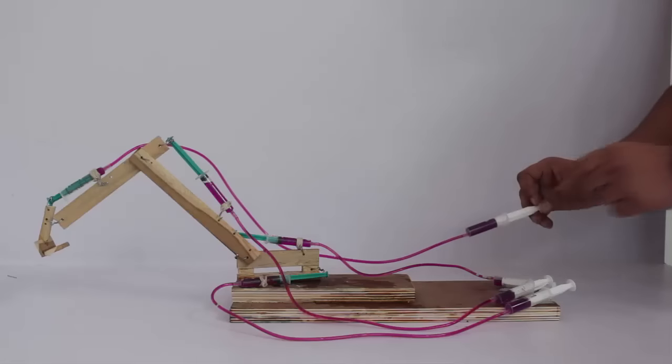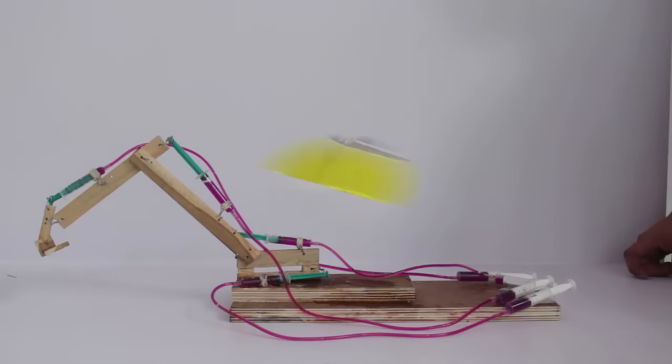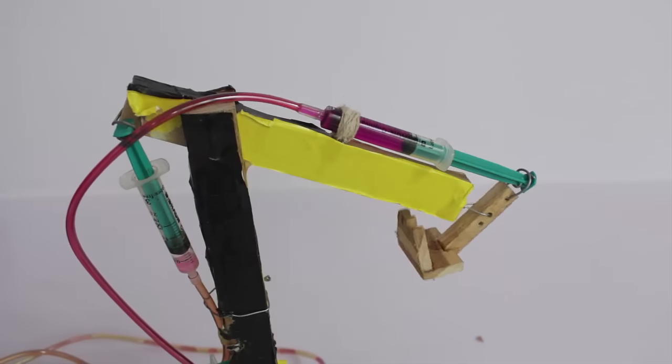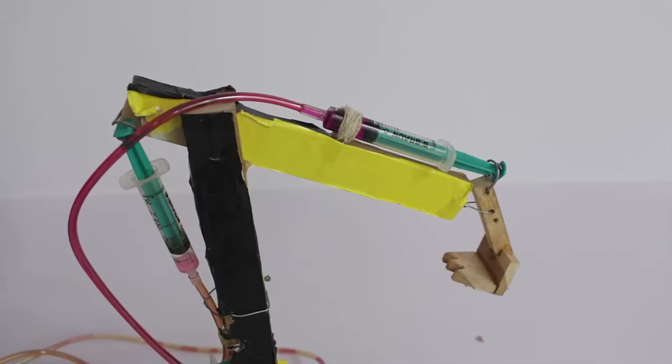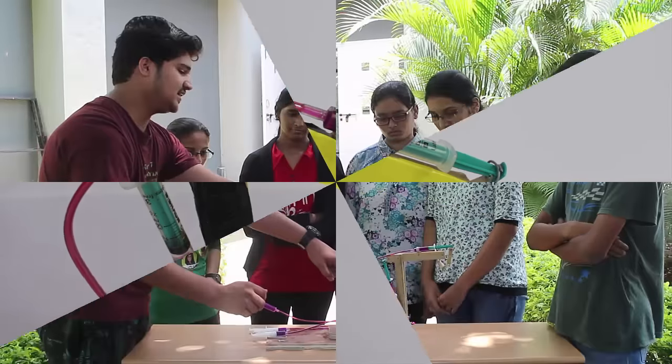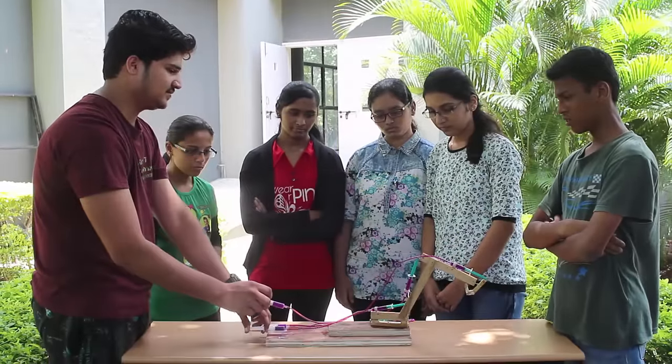You can see a range of movements acquired with hydraulic pressure. The nice thing about this model is that it uses throwaway objects to make a dynamic working model of a JCB.